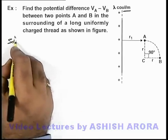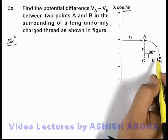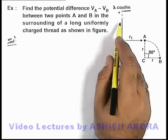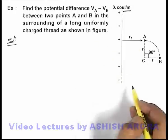Here in this situation to find the potential difference between point A and B, we know that in the surrounding of a uniformly charged thread, the equipotential surfaces are coaxial cylinders.